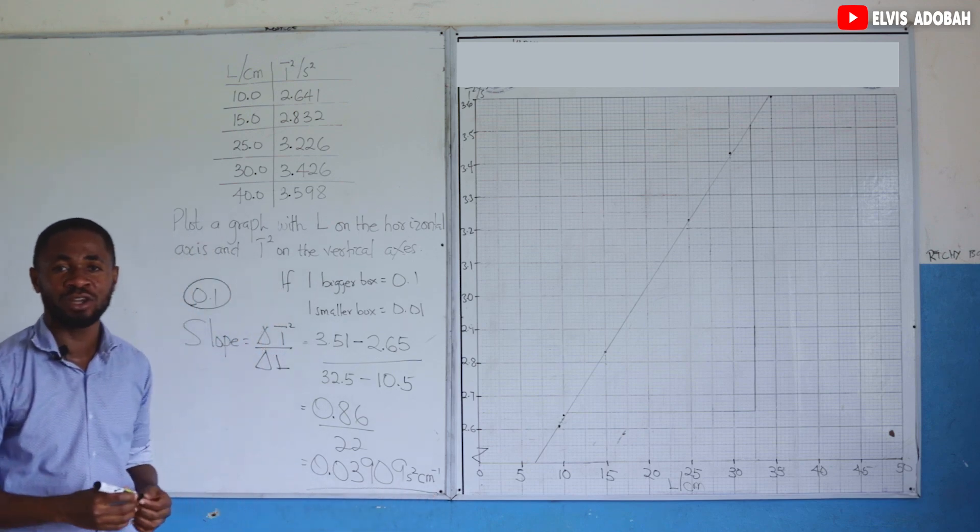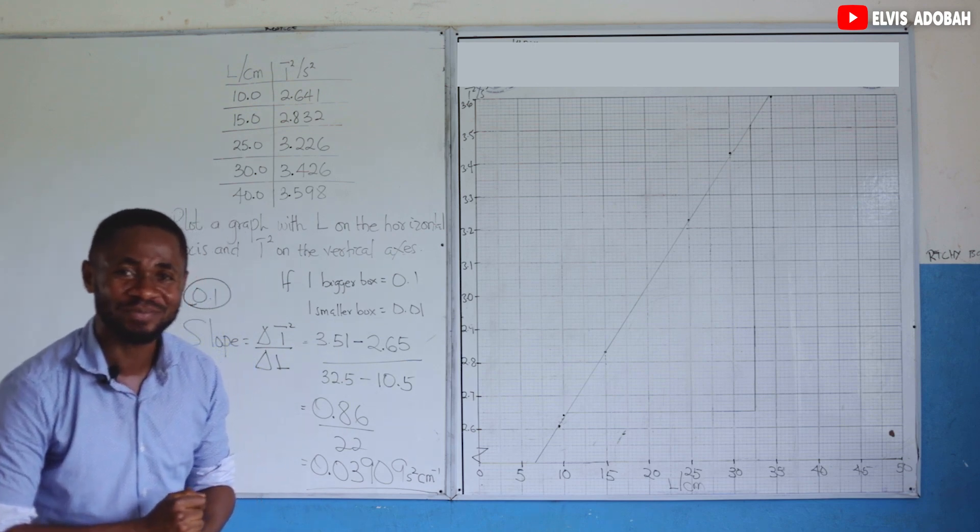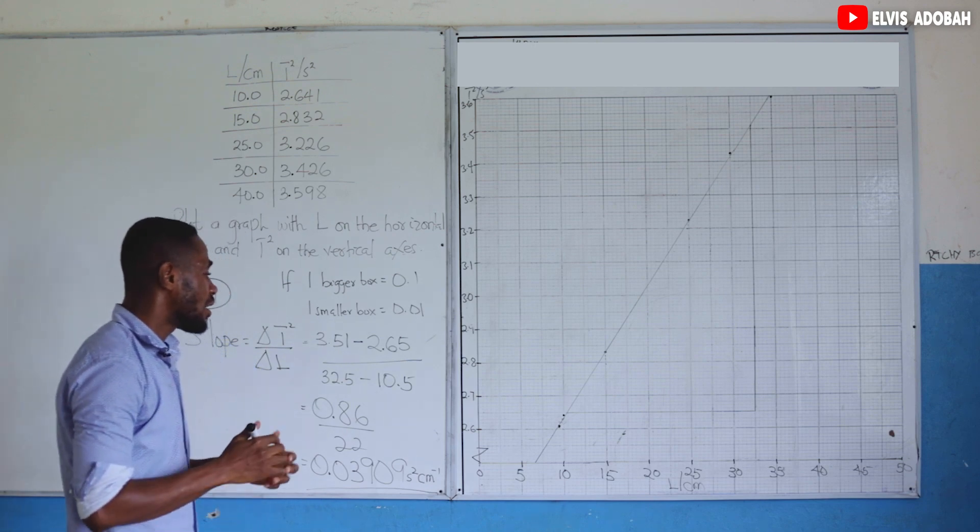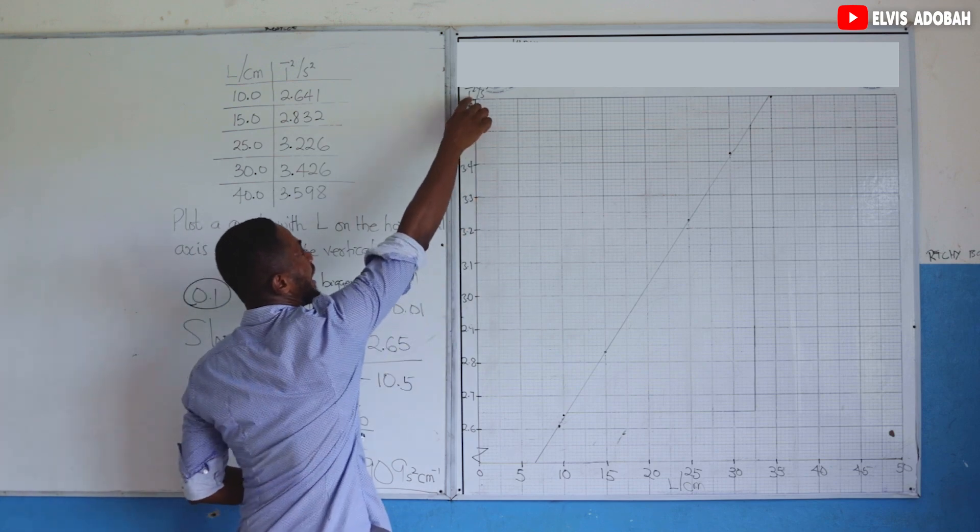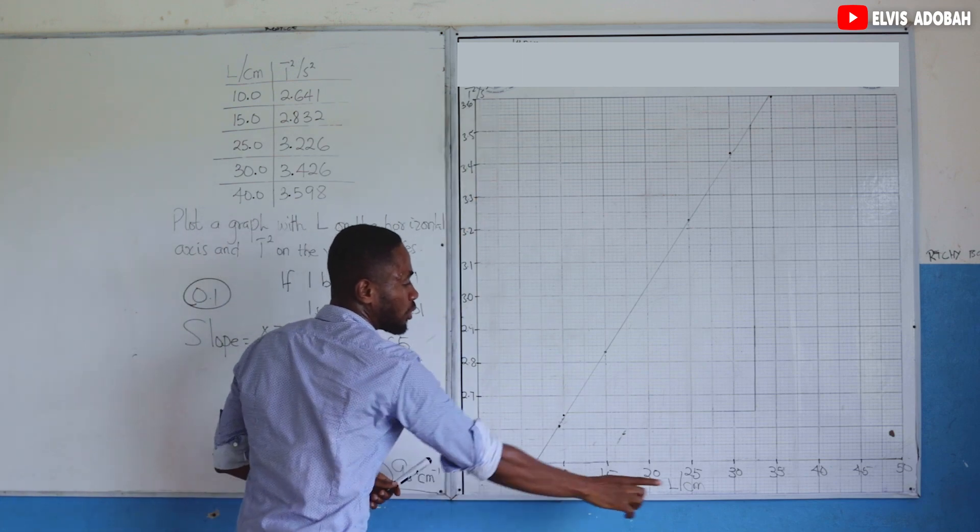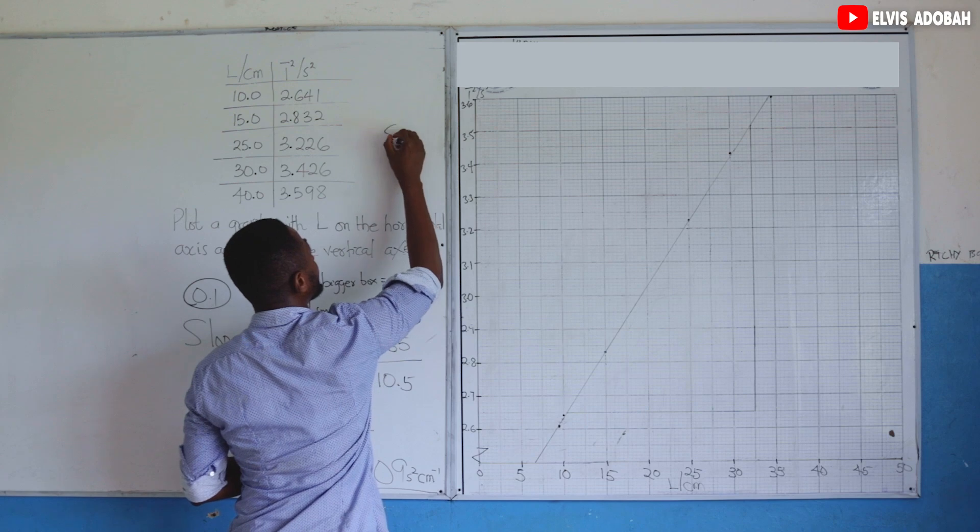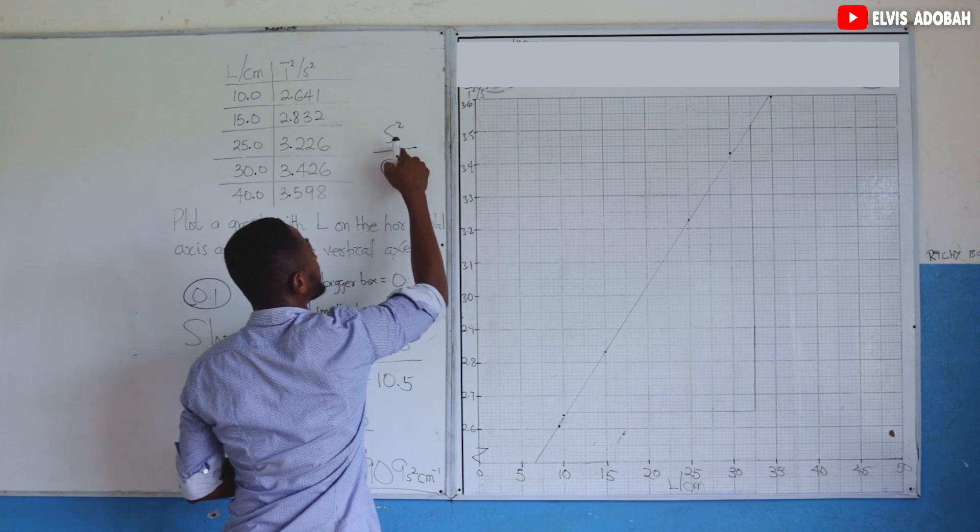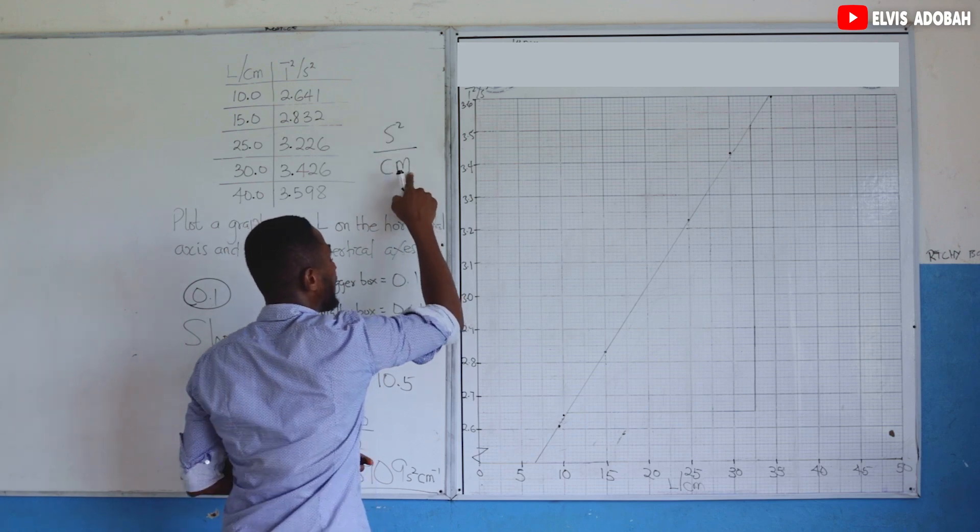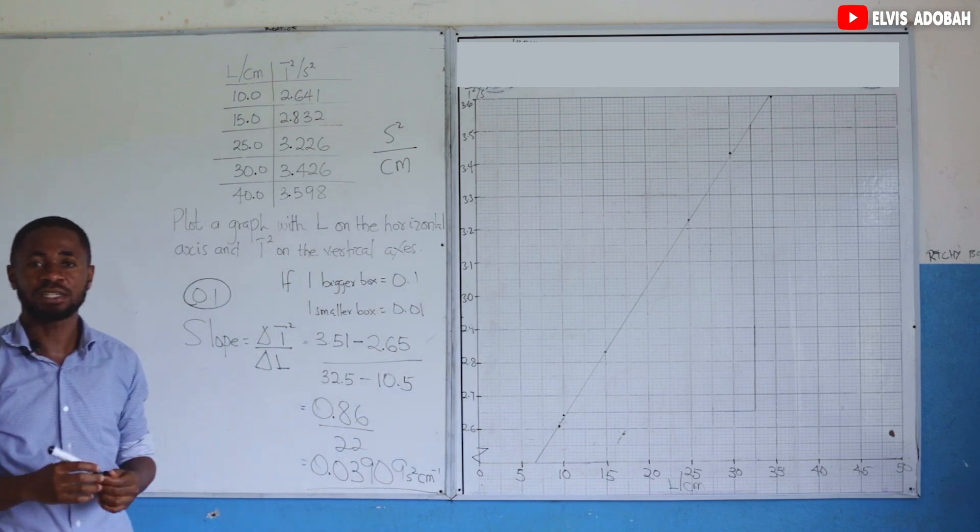Please, whenever you calculate the slope, don't forget to add the unit. The unit of the slope is the unit for the vertical axis divided by that of the horizontal axis. So vertical axis, second squared divided by centimeter. And this is called second squared per centimeter, as we've written here.